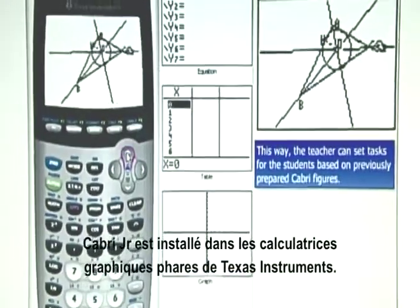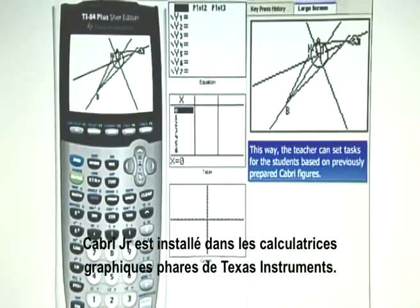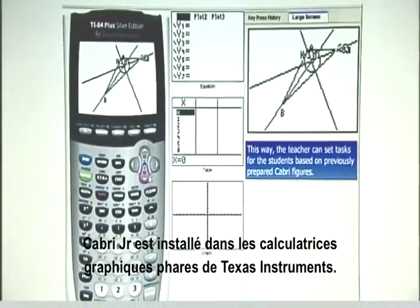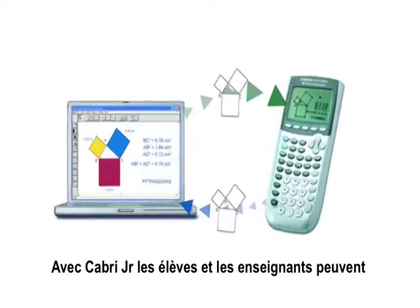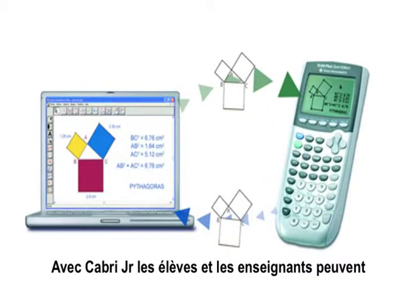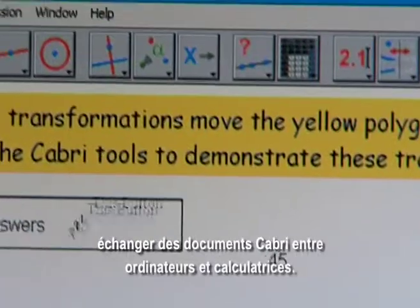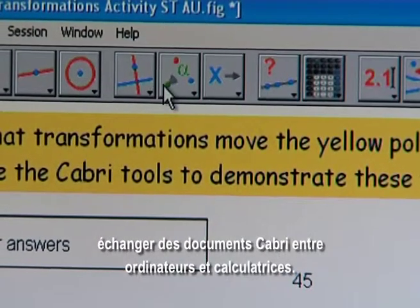Cabri is embedded in Texas Instruments graphing calculators. With Cabri Junior, students and teachers can exchange Cabri files between a PC and their calculators.